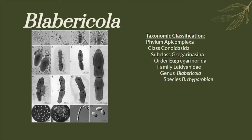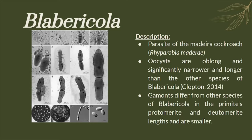The next species is from the genus Blabericola. It is a parasite of cockroaches with its oocyst oblong, and significantly narrower and longer than other species of Blabericola.